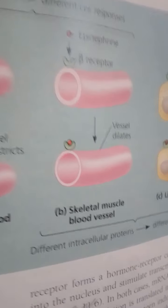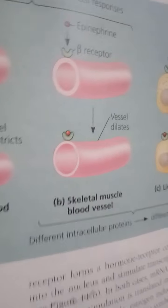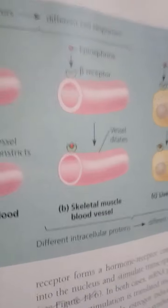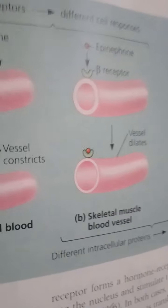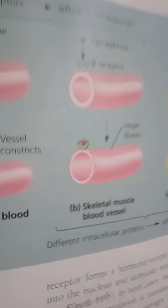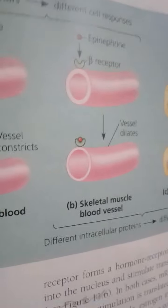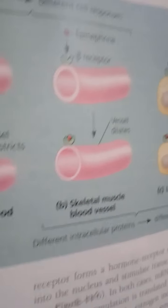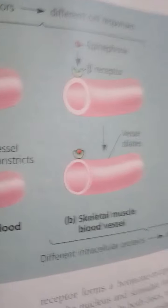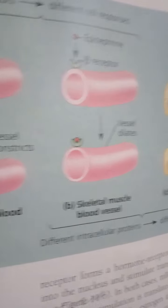For example, estrogen induces cells in the reproductive system of a female bird to synthesize large amounts of ovalbumin, the main protein of egg white. As with hormones that bind to surface receptors, hormones that bind to intracellular receptors may exert different effects on different target cells. The estrogen that stimulates a bird's reproductive system to make ovalbumin causes the bird's liver to make other proteins.